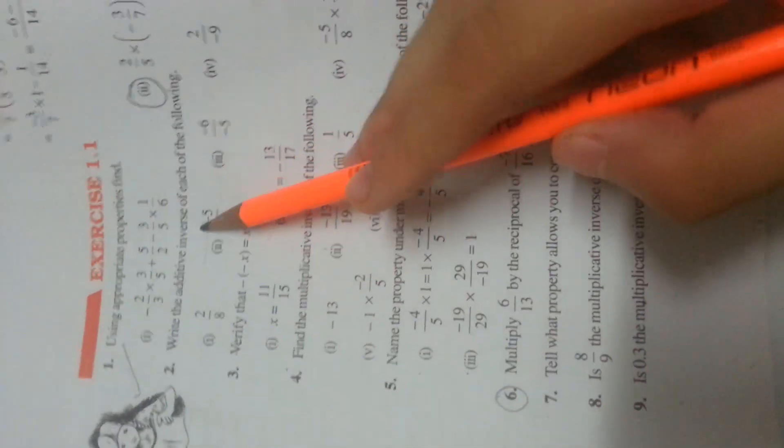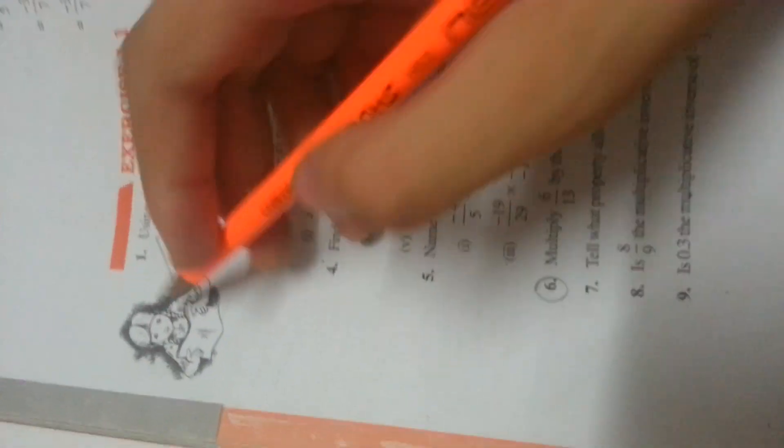Then these are also important. Multiplicative inverse, additive inverse and these. So question 2, 3rd and 4th.